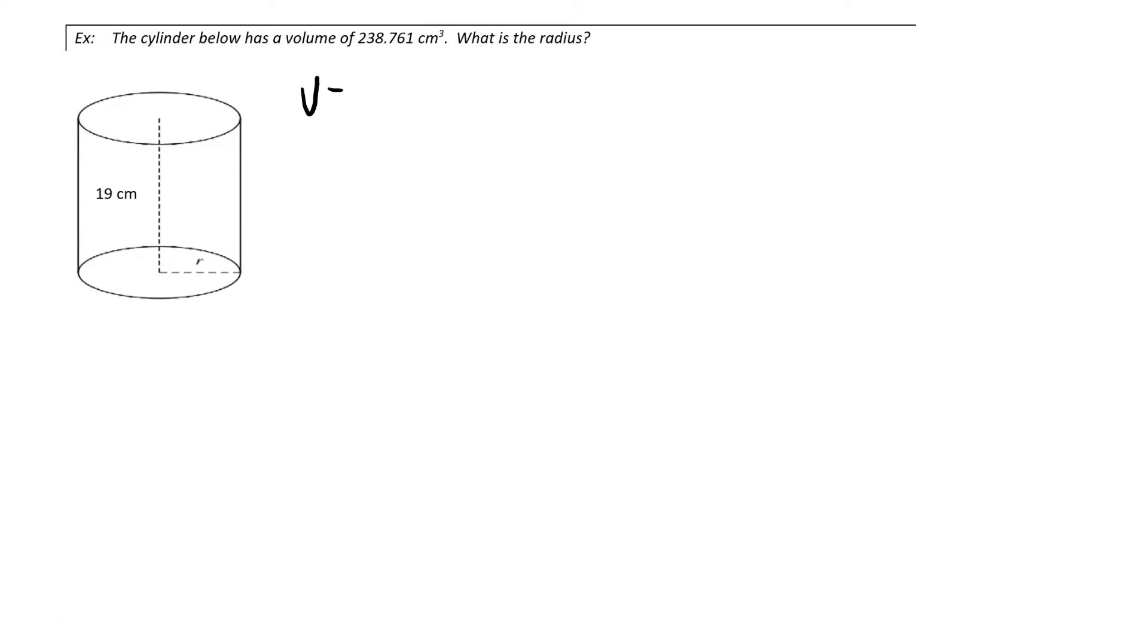We remember that the volume of a cylinder is equal to the area of the base times the height, and the area of the base is pi r squared times the height.